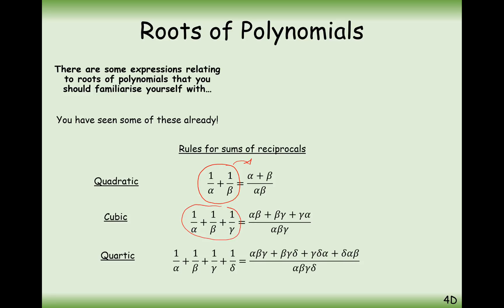So whenever you're asked to find the value of the sum of the reciprocals, the best thing to do is to add all of the reciprocals together, and then it will simplify to make an expression whose numerator and denominator you can find. In this case, the numerator is going to be minus B over A, and the denominator is C over A. For the cubic case, on the top this is going to be C over A, which is the sum of the doubles, and on the bottom it's the sum of the triples, so it's going to be minus D over A.